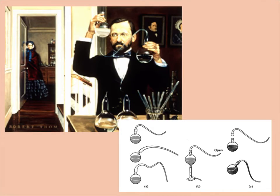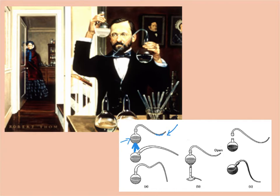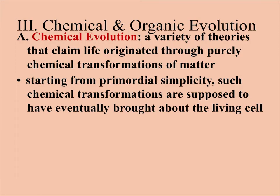Pasteur's swan-neck flask was significant because it addressed all previous objections. He heated the broth, which killed organisms. The curved neck let air in but trapped bacteria in the curve — so nothing grew in the flask itself. This proved the bacteria came from the air, not the broth, and that fresh air alone without microbial contamination would not produce life. This successfully disproved spontaneous generation.